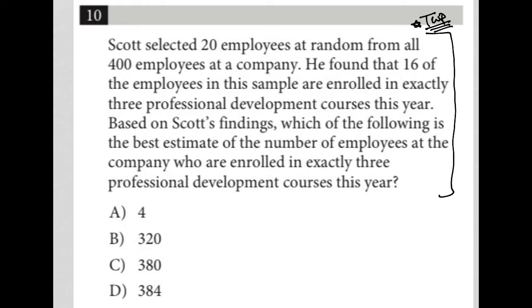The first sentence here says Scott selected 20 employees at random from all 400 employees at a company. So 20 out of 400 is what I'm going to say. That would be the fraction here.